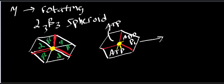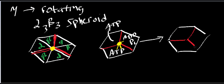When the gamma shaft rotates or is in a particular conformation with respect to the alpha3-beta3 spheroid, each individual part of the spheroid has a different activity. If I label the subunits alpha-beta 1, alpha-beta 2, and alpha-beta 3, as the gamma shaft rotates, each subunit cycles through the different activities.